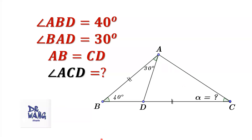Hello everyone, I'm Dr. Wang. Here is the question. If angle ABD equals 40 degrees, angle BAD equals 30 degrees, AB equals CD, we want to find angle ACD.